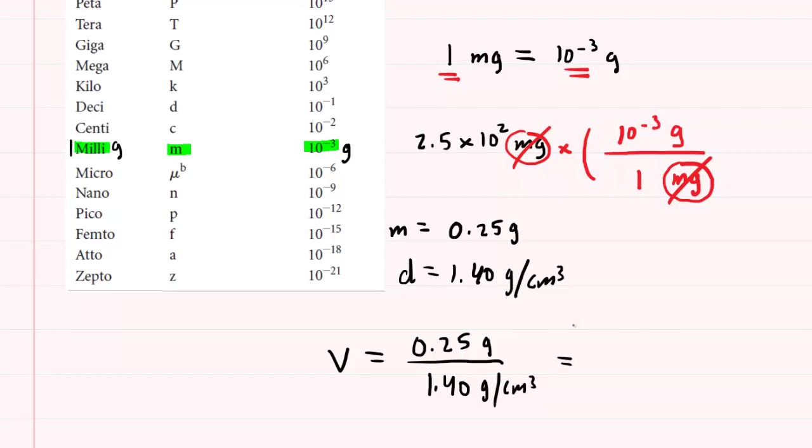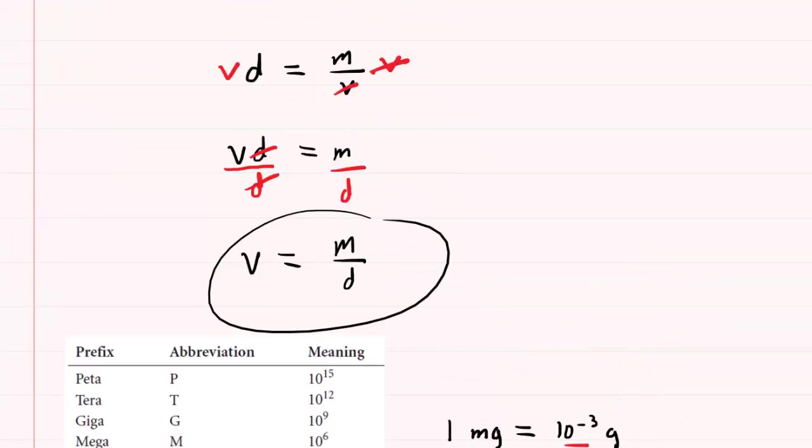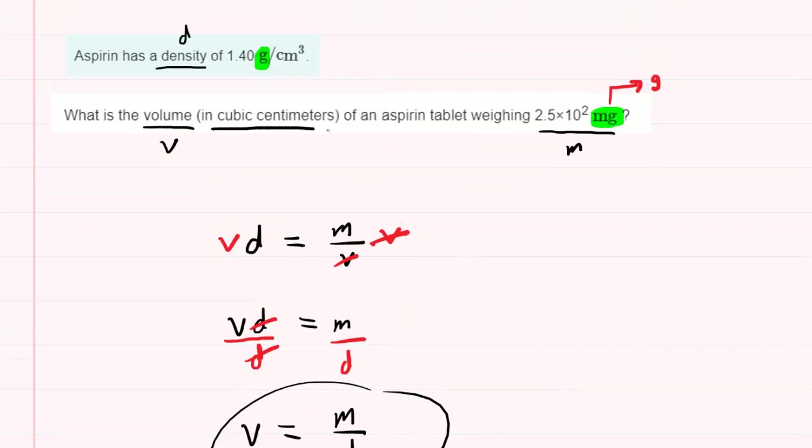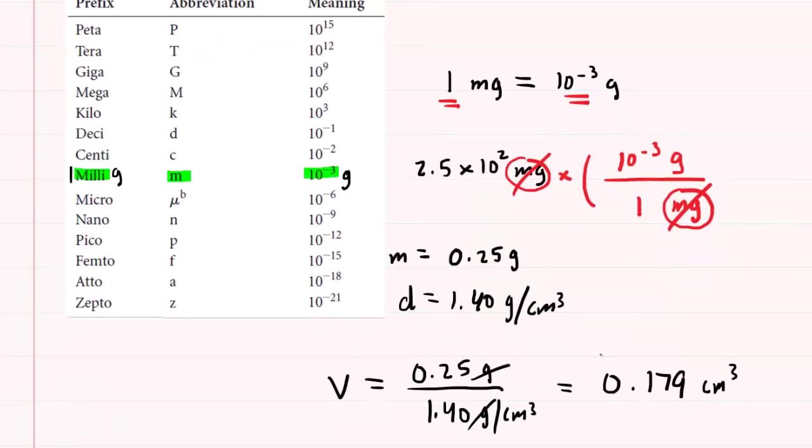When we do so, we get about 0.18, or perhaps we can say 0.179. Not sure if your homework system is picky about sig figs, but this should suffice. When you look at the units, the grams will cancel out, and that's going to leave you with centimeters cubed. And that's exactly the unit that the question requested. So this would be the correct answer to part A.